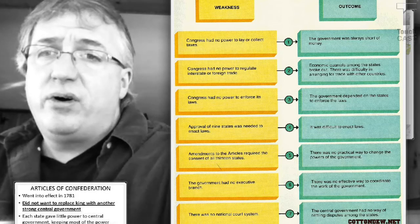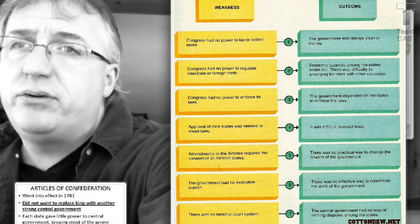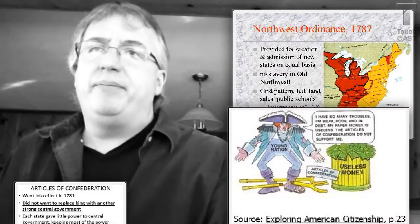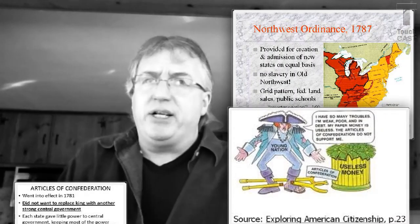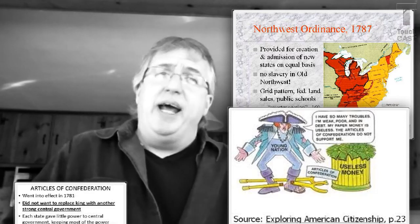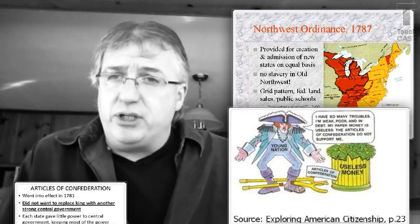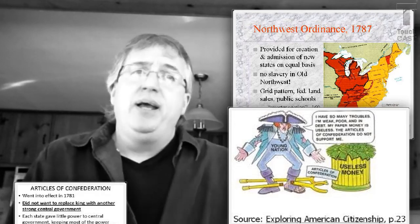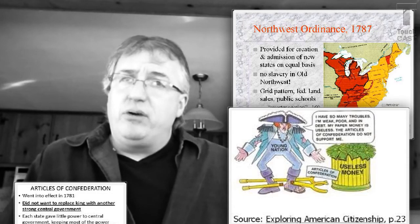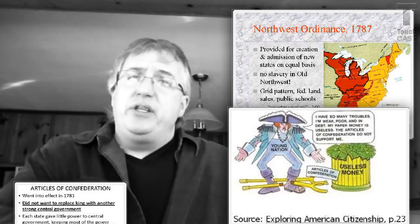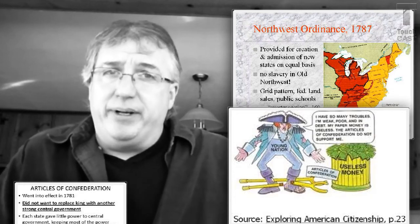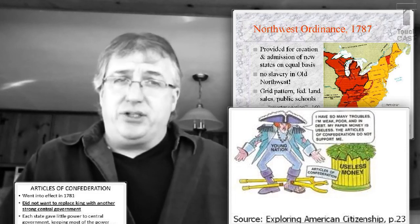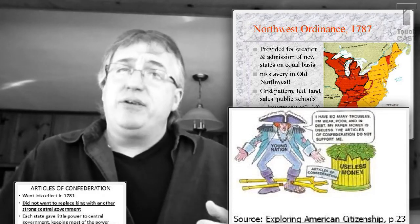The straw that breaks the camel's back — really demonstrating to everyone that the Articles are bad — is Shays' Rebellion. Shays' Rebellion was led by poor farmers in Massachusetts over unfair taxes and monetary policies, and it scares the upper class. The Massachusetts government is both unprepared and unable to respond. They ask the federal government for help, but the federal government is unable to raise an army to assist Massachusetts. This event really demonstrates the weaknesses of our national government and shows that we need a stronger central government, especially to provide stability and protection of our natural rights.